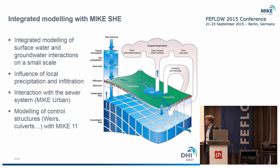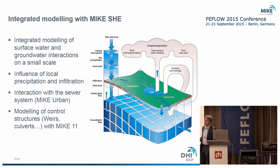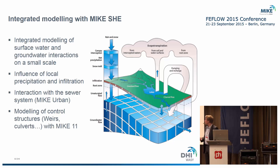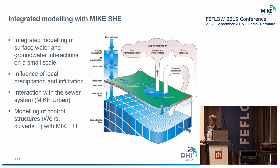We used the software Mike SHE. Because we had overland flow during the flood as well as groundwater interaction, we decided to model these processes in an integrated way. We also considered coupling with the urban drainage model Mike URBAN, but as the project started we had insufficient information about the sewer system, so we only used Mike 11 coupling for the river systems.